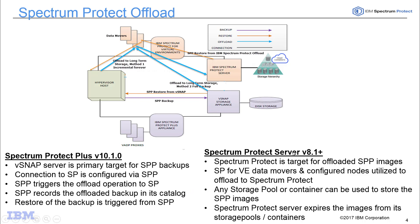The Spectrum Protect Server version 8.1 is the target for the offloaded Spectrum Protect Plus images. You don't have to offload all images — you can choose which images and how often to offload. It can be any of the Spectrum Protect Plus storage pools utilized for this. This implementation of Spectrum Protect Plus version 10.1 requires Spectrum Protect for VE to be installed, as it is used to perform offloads via data movers to the Spectrum Protect Server, which catalogs, tracks, and expires images based on policy.